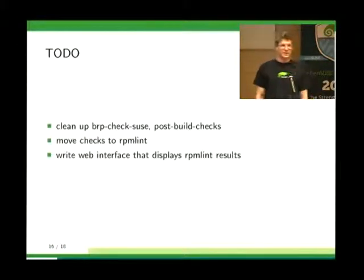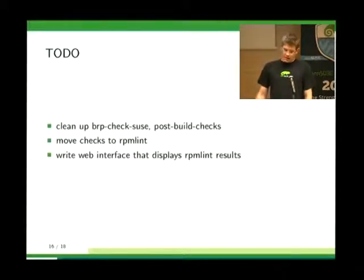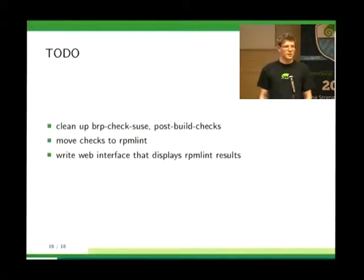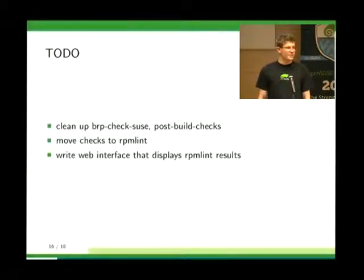There are lots of things to do. The BRP checks SUSE and post-build scripts contain legacy checks that should be moved to RPM-Lint, so any volunteer would be welcome. What I'd really like to see is a web interface that collects all RPM-Lint results and shows statistics on which packages fail which checks. I made a rough draft but it needs to collect build logs from the build server and have a proper database and web interface. That might be a project for a student who wants to program Python.